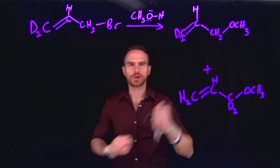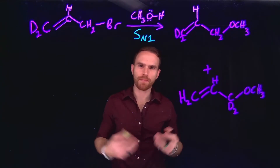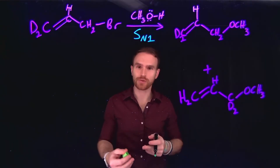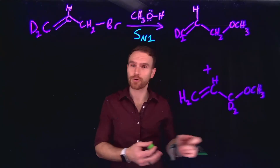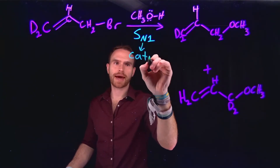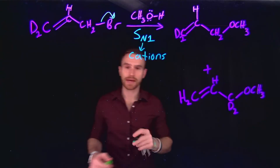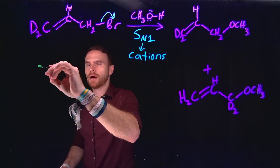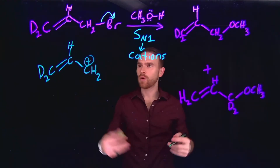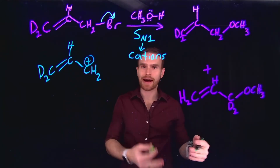For this SN1 reaction, which proceeds via an SN1 mechanism, we can form two different products. It's important to remember how to draw electron-pushing arrows when thinking about different reactions, as we'll continue to learn new mechanisms in Organic Chemistry 2. The first step: bromine is a very good leaving group, so bromine leaves, generating a carbocation at the terminal carbon. What's important to note is that this molecule has an alkene adjacent to this carbocation — this is what's known as an allylic carbocation.